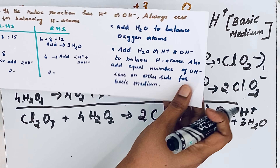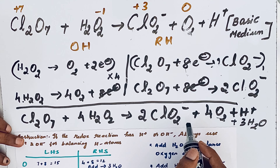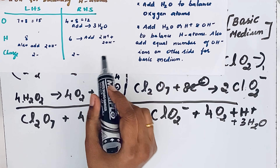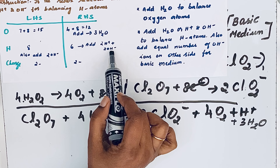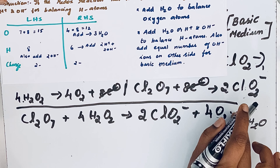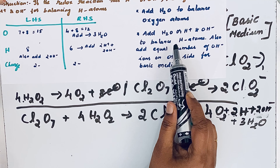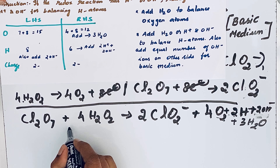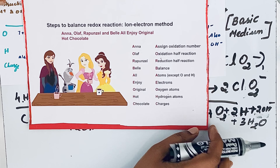To balance hydrogen atoms: on the left-hand side there are eight hydrogen atoms, but on the right-hand side three H₂O gives six hydrogen atoms — so two hydrogen atoms are short. As per the instruction, we write 2H⁺ on the left. We already have an H⁺ term, so we add 2H⁺ in front of it. For a basic medium, we also add an equal number of OH⁻ ions on the other side, giving 2OH⁻.